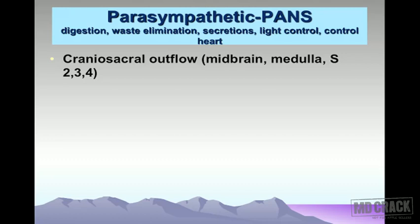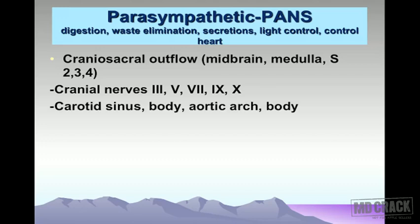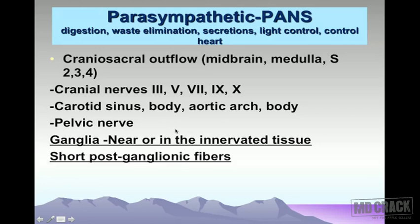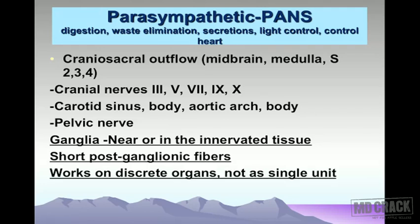The parasympathetic outflow comes from the cranial-sacral region — that's the midbrain, medulla, and sacral S2, S3, S4. The cranial nerves involved are 3, 5, 7, 9, and 10. The ganglia in the parasympathetic nervous system are located near or within the innervated tissue, giving you short post-ganglionic fibers.